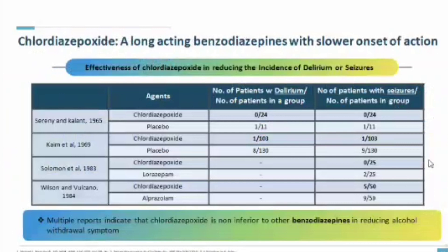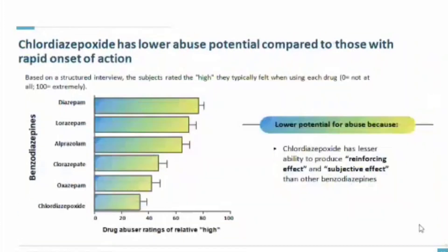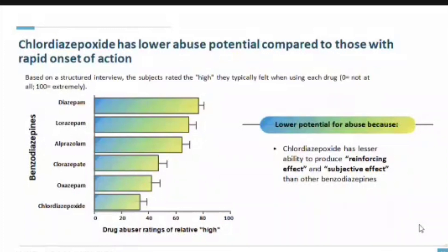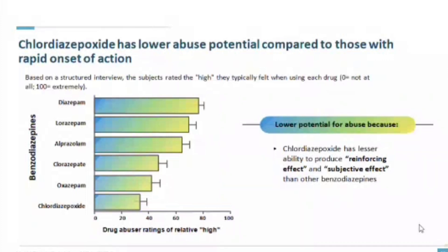Chlordiazepoxide is a long-acting benzodiazepine with slower onset of action. Multiple reports indicate it is non-inferior to other benzodiazepines in reducing alcohol withdrawal symptoms and reducing delirium tremens and seizures. Chlordiazepoxide also has lower abuse potential compared to those with rapid onset of action. Comparing abuse potential, diazepam, lorazepam, alcohol, clorazepam, and oxazepam have more abuse potential than chlordiazepoxide, which has lesser ability to produce reinforcing and subjective effects — making chlordiazepoxide a safer choice in treating alcohol withdrawal syndrome.